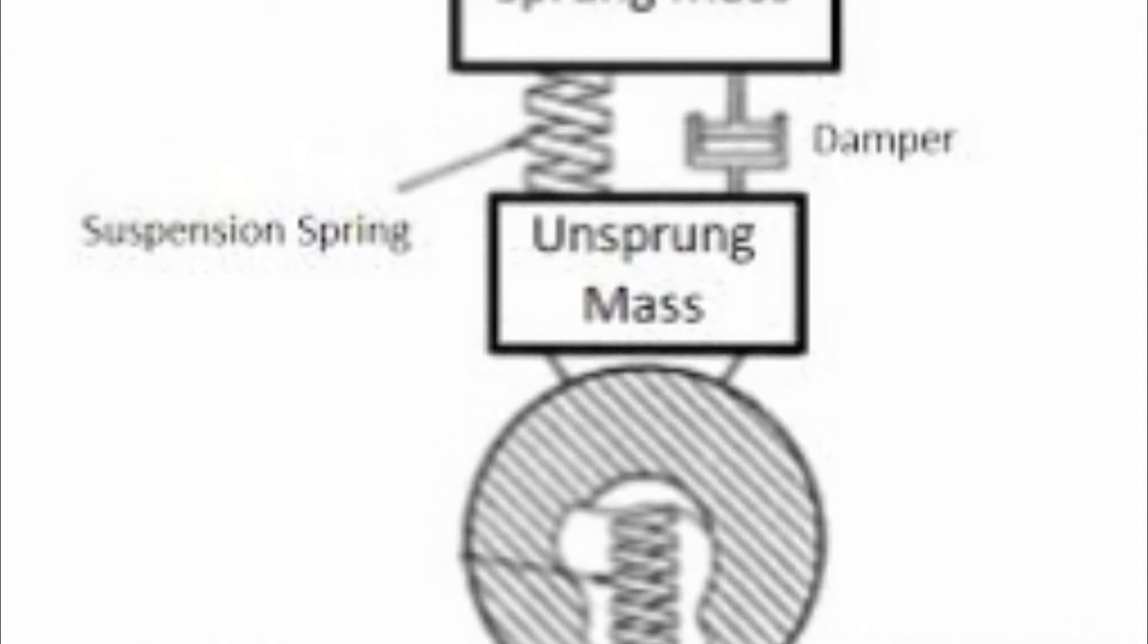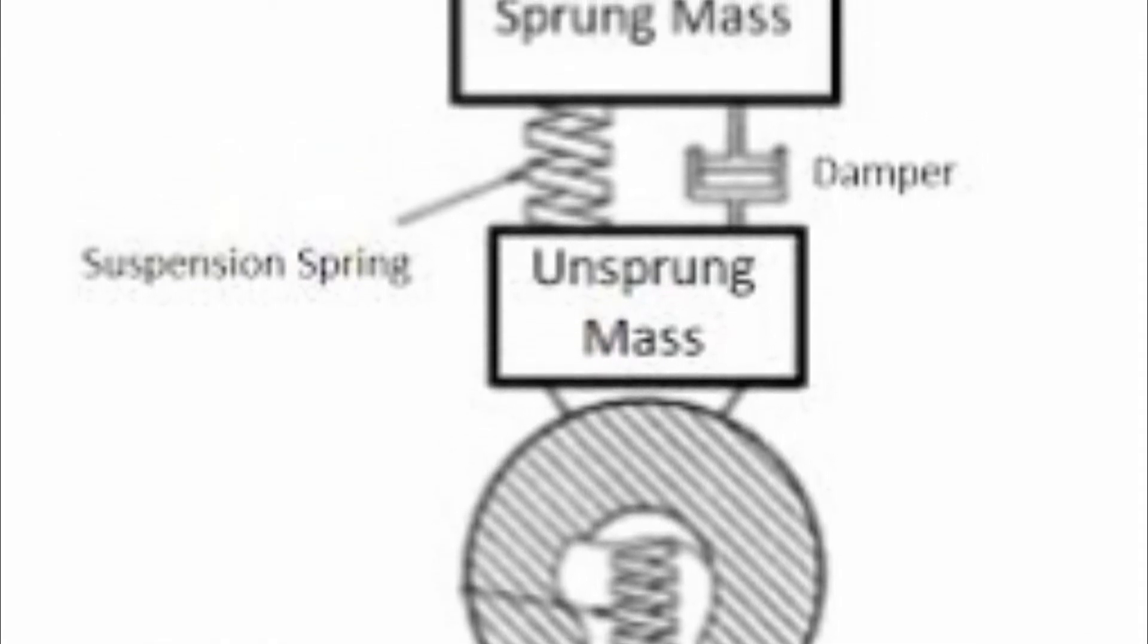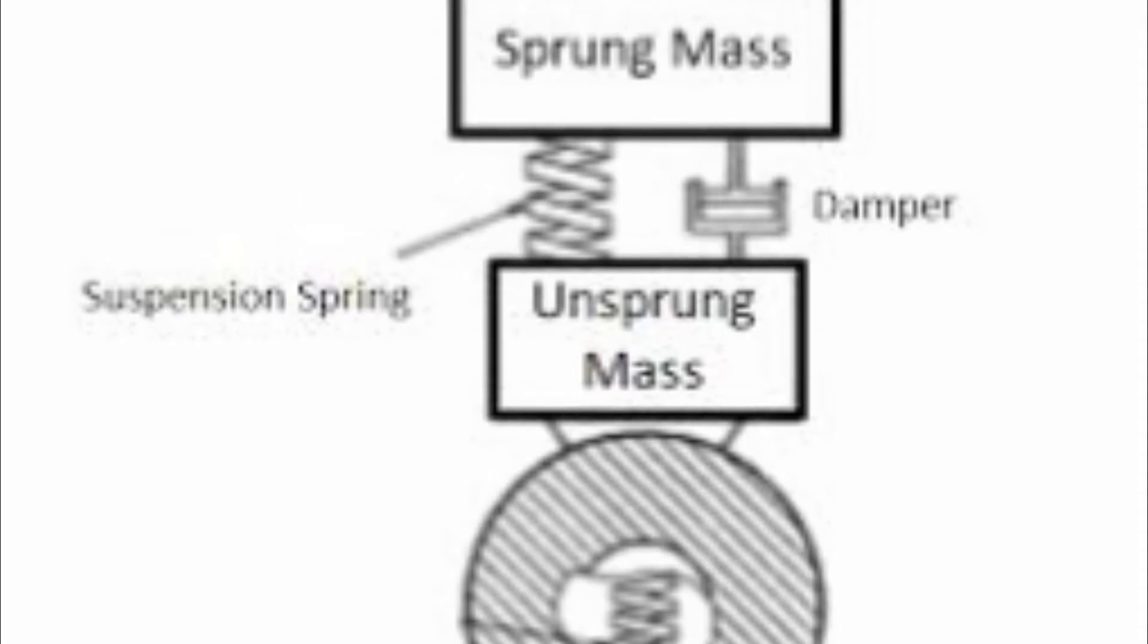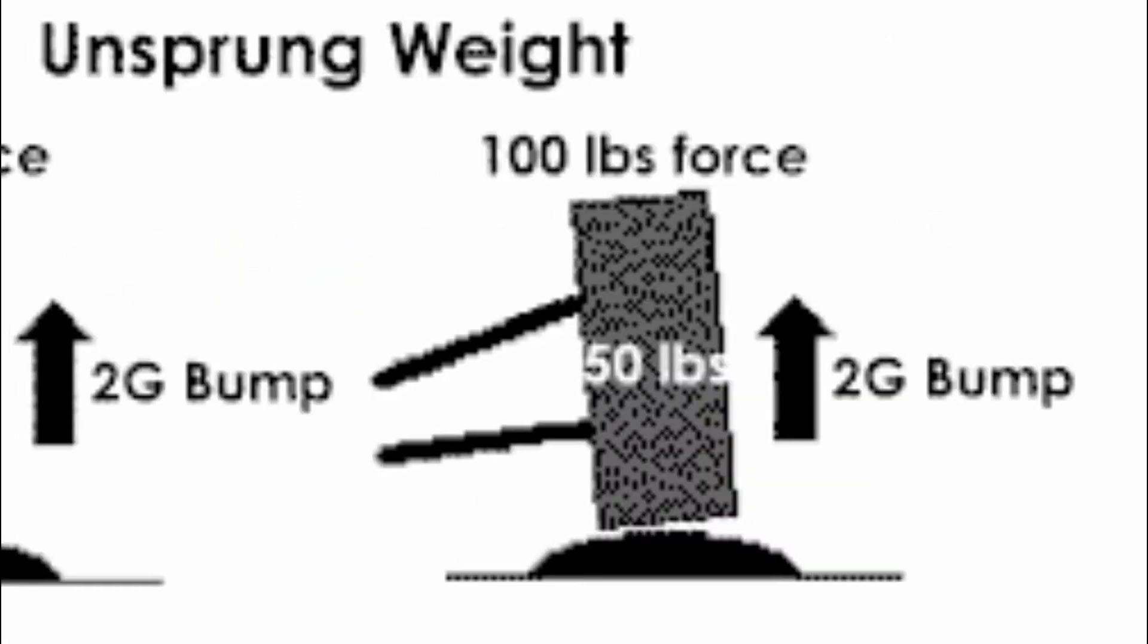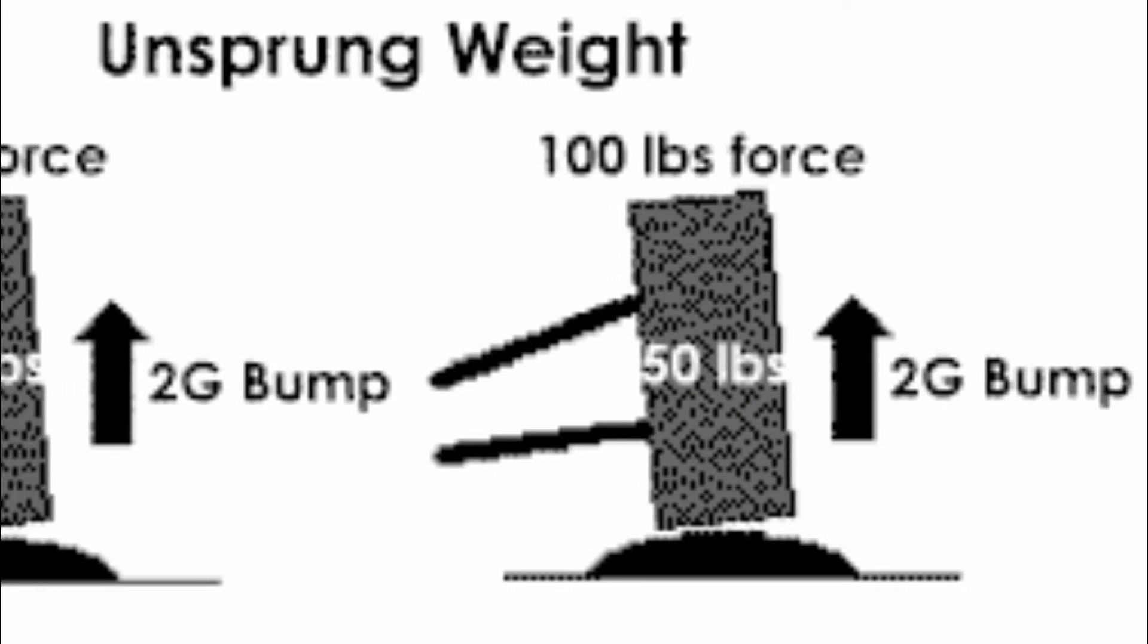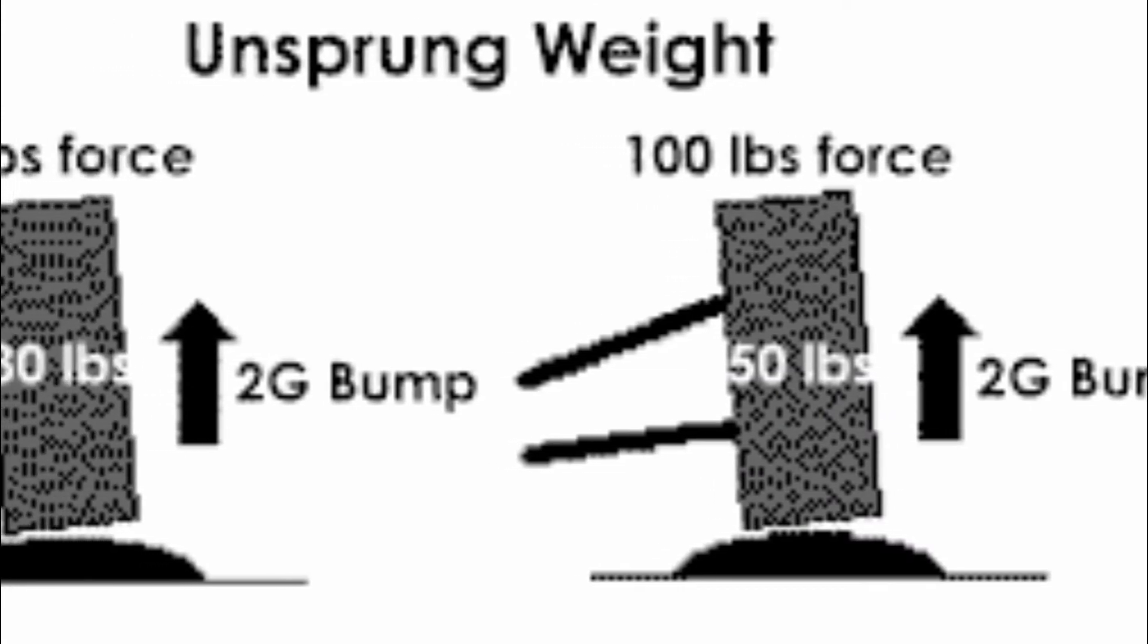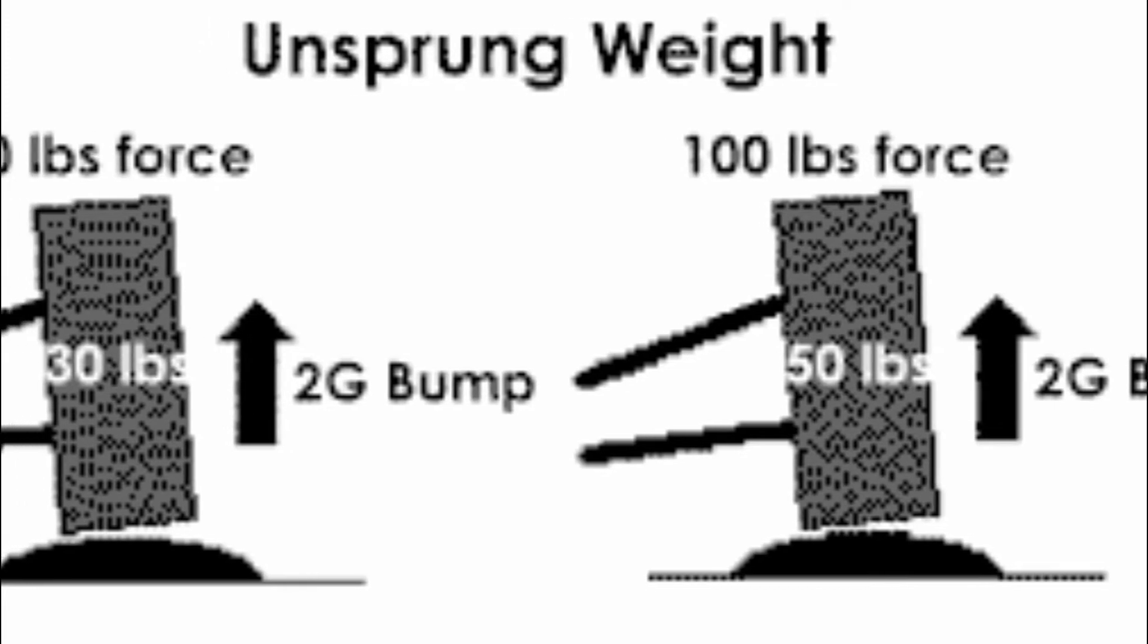Bumps and surface imperfections in the road cause tire compression, inducing a force on the unsprung mass. The unsprung mass then reacts to this force with movement of its own. The motion amplitude for short bumps is inversely proportional to the weight.